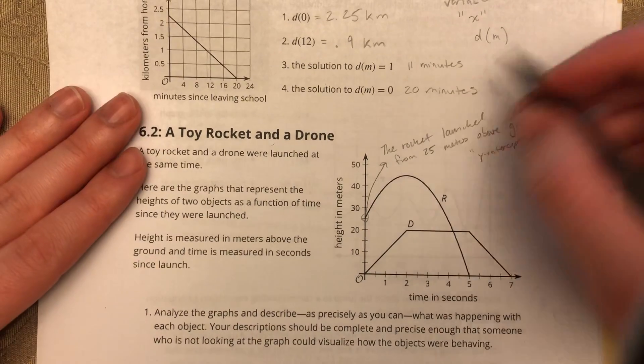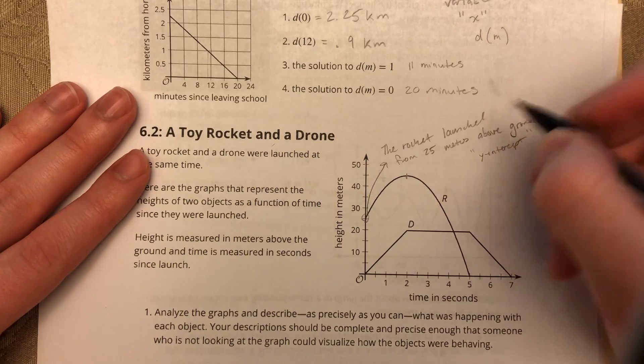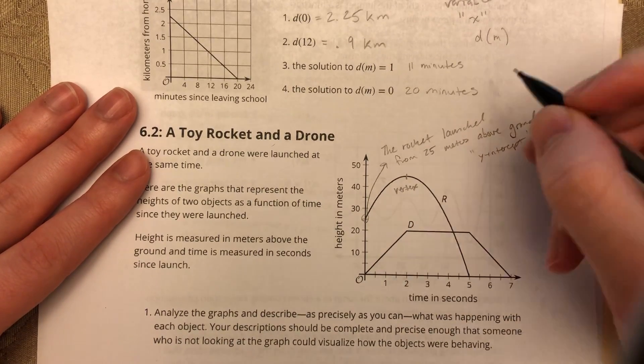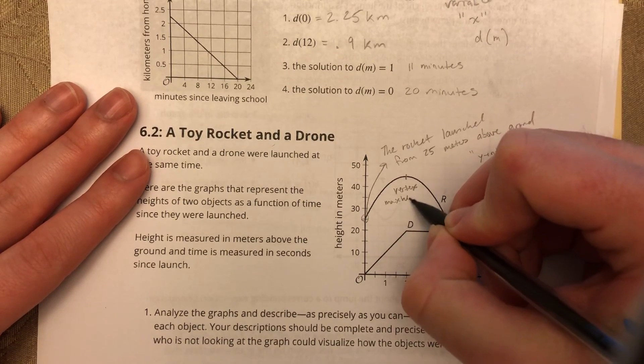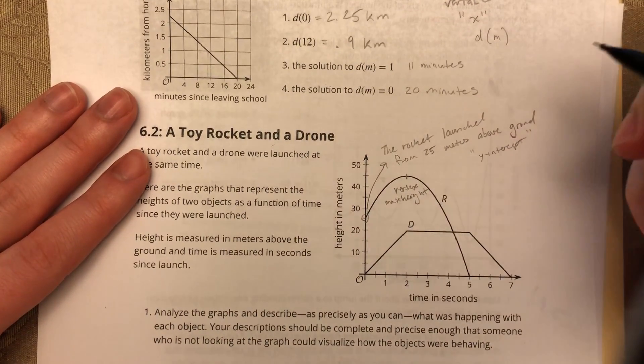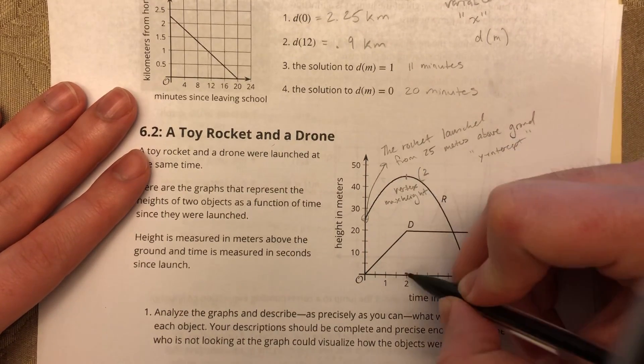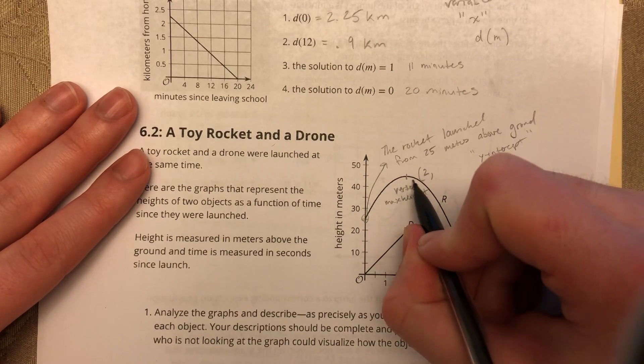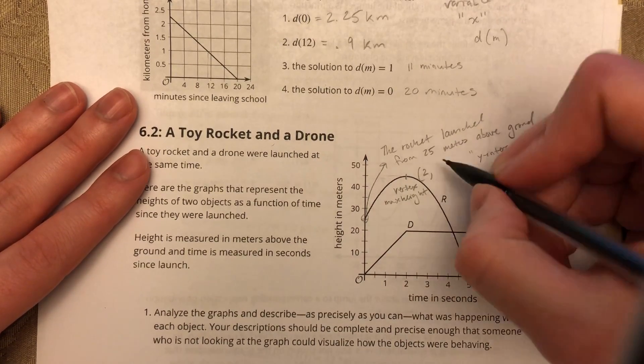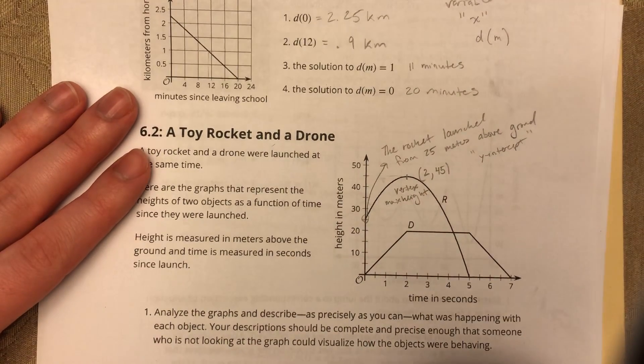Alright, then if we also look at the rocket, another very important part is right here. And that's the vertex. Alright, and that's what we call, in this case, would be our max height. So that max height occurs after, I would say, two seconds. And the maximum height looks to be at about, let's say, yeah, about 45 meters. That's the thing that we have right here.